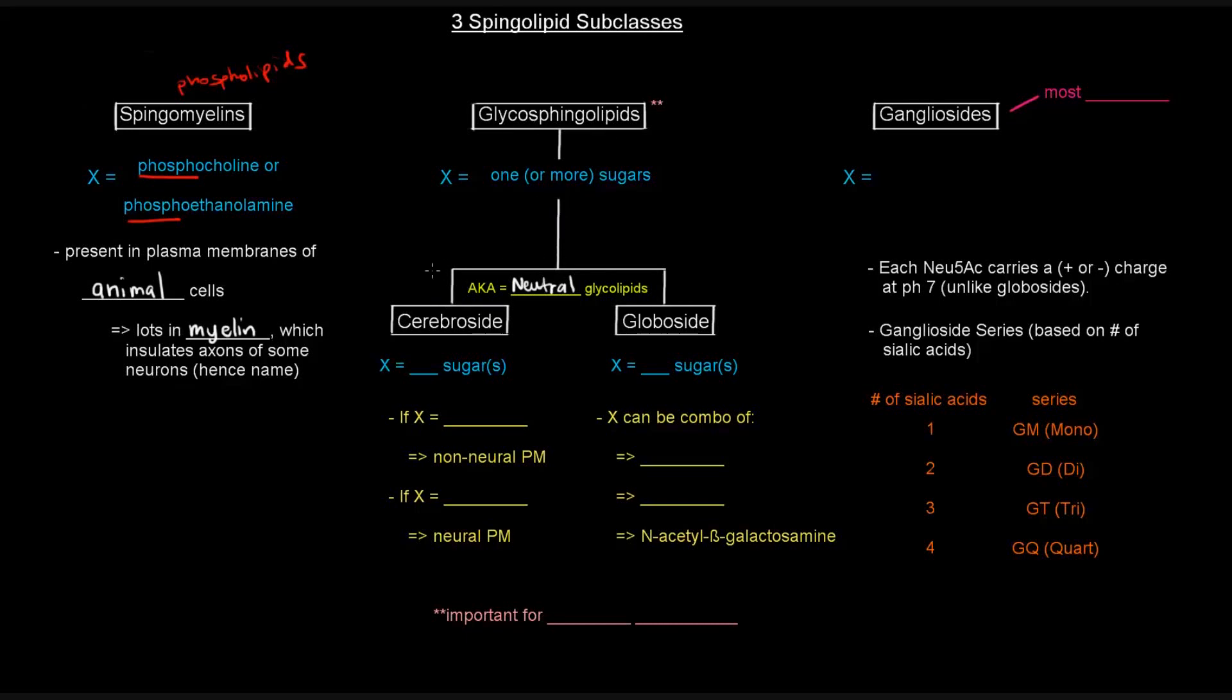So, glycosphingolipids are made up of cerebrosides and globosides. Cerebrosides, basically, when you have just one sugar. And globoside is when you have two or more sugars.